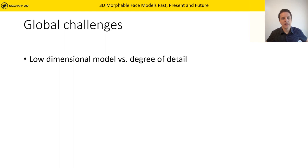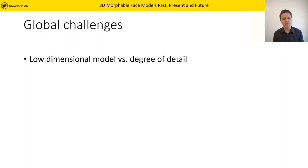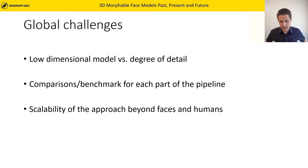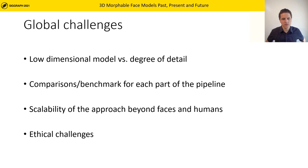Besides individual directions and applications, we also provide our bigger-picture view on the state of 3D morphable models. A key challenge is finding a low-dimensional representation suitable for an inverse rendering setting that can still handle a higher degree of detail. Another challenge is how hard it is to compare different modeling techniques or inverse rendering approaches — there is a lack of benchmarks the community agrees on, and most comparison publications are done ad hoc. It is also unclear how analysis-by-synthesis methods can scale beyond faces, for example to include hair or other objects. Both on the modeling side and the computer vision side, there are ethical challenges with privacy and dataset bias that we hope to reduce with technical solutions.